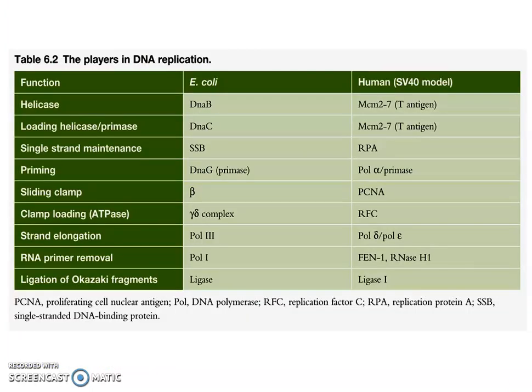Now let's discuss the chief players in DNA replication. In E. coli, focus is on prokaryotic replication only; eukaryotic replication will be discussed in later classes. Helicase is used to unwind the tightly wrapped DNA. The helicase present in E. coli is DNA B. There is also a helicase loader, DNA C, which loads helicase onto the DNA double helix.